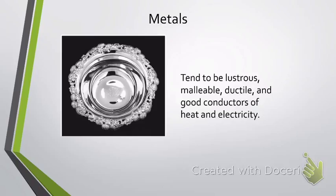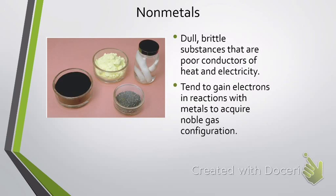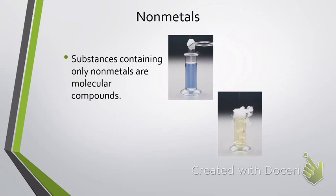Once again, this is just a picture of a metal — we're talking about silver. It's shiny, tends to be malleable and ductile, and is a good conductor of heat and electricity. Whereas nonmetals tend to be very dull, brittle — you can think of chalk — and they are poor conductors, which means they are better insulators. Also, nonmetals tend to gain electrons to look like a noble gas, whereas metals tend to lose electrons. Whenever nonmetals come together to form a bond, they're going to be covalently bound — molecular compounds. Whereas a metal that binds with a nonmetal tends to form an ionic bond.